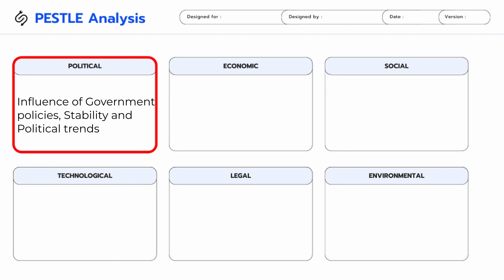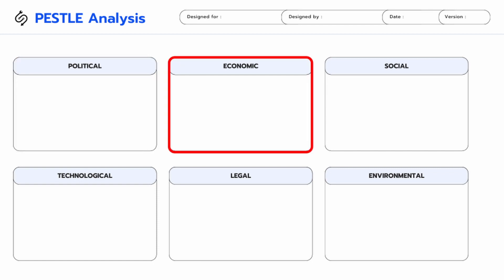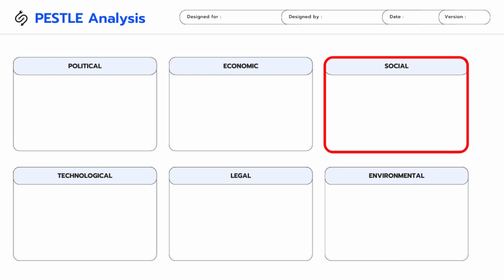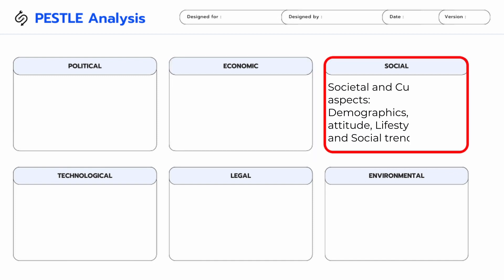Economic factors involve the examination of economic indicators such as inflation rates, exchange rates, interest rates, and overall economic stability. Social factors focus on the societal and cultural aspects that can affect a business, including demographics, cultural attitudes, and social trends.